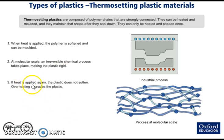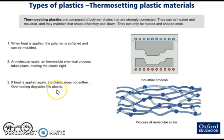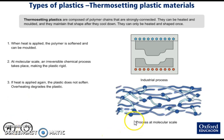If heat is applied again — if we heat the plastic again — the plastic doesn't soften. And overheating degrades the plastic. That's the main difference between thermosetting and thermoplastic. This is what happens at the molecular scale in the chains when we overheat it again after the first process.